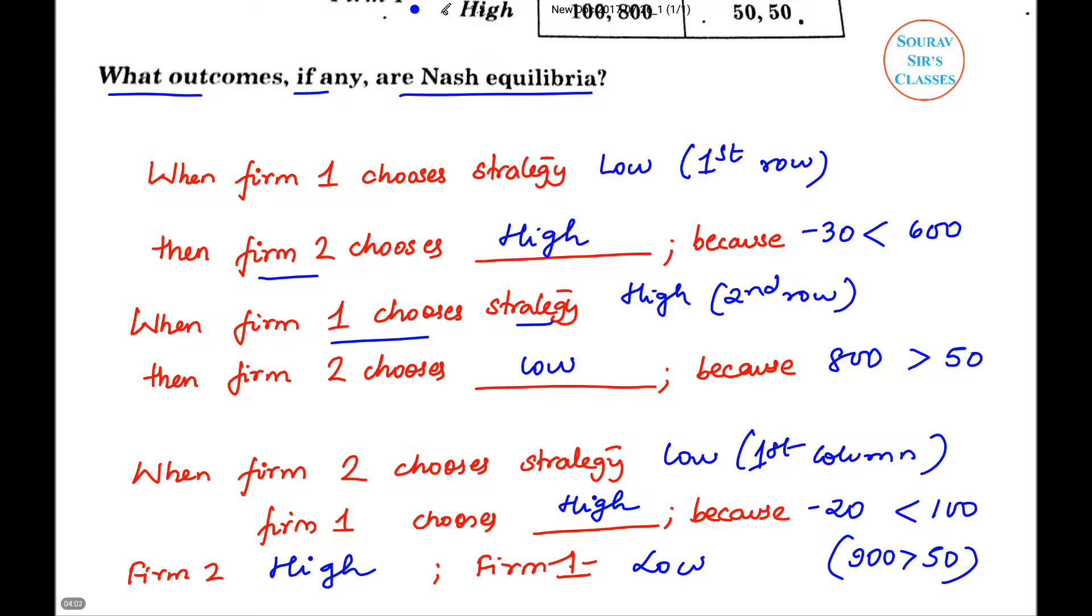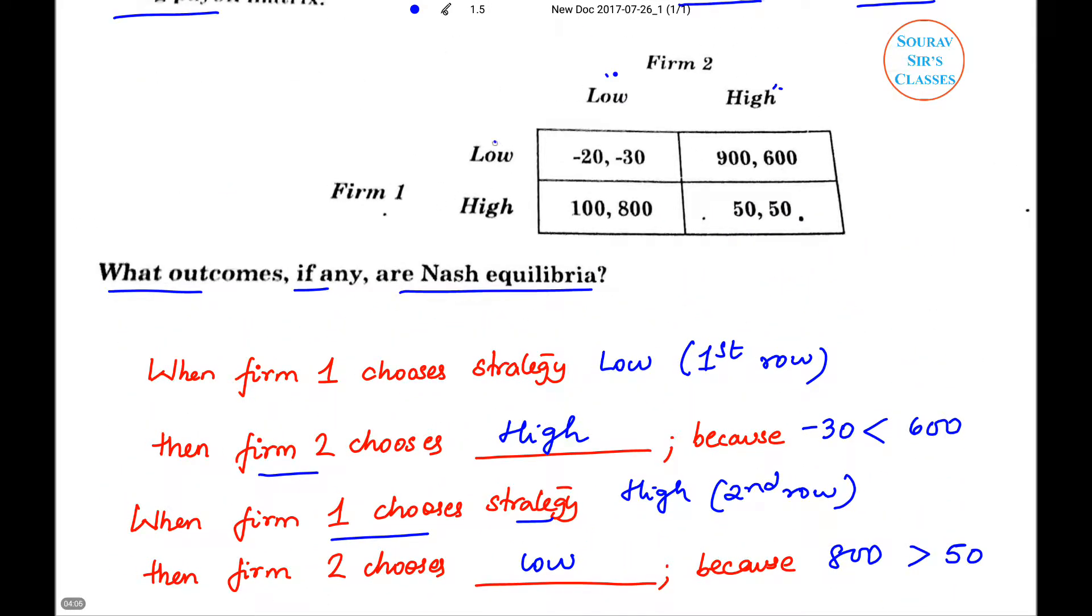So what we get is that when Firm 1 chooses low, Firm 2 will choose minus 30 or 600, that is 600. When Firm 1 chooses high, Firm 2 has choice between 800 and 50 and ends up choosing 800. When Firm 2 chooses low, that means this first column, Firm 1 can choose between minus 20 and 100, and it will choose 100. When Firm 2 chooses high, Firm 1 has a choice between 900 and 50, and it will choose 900.